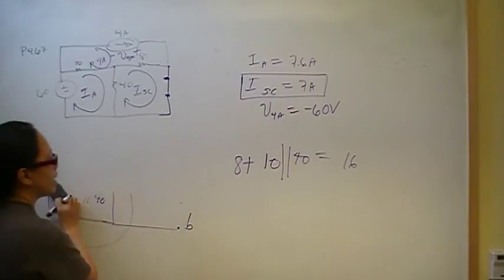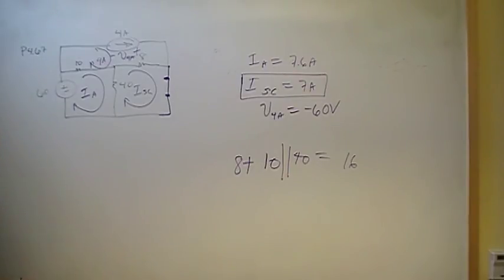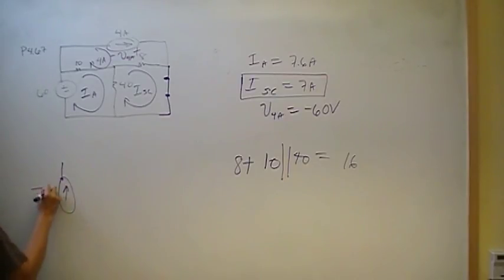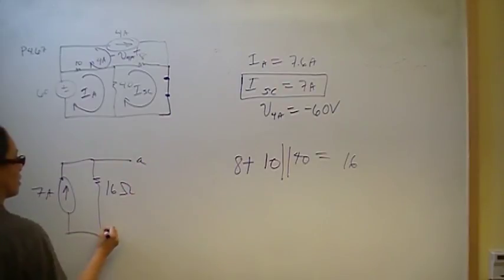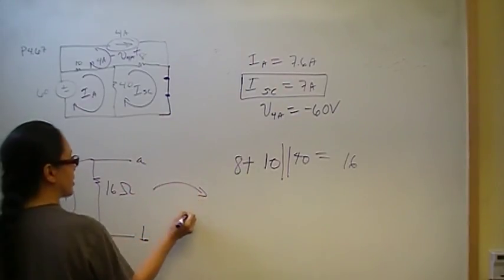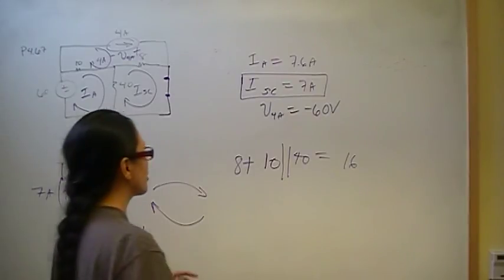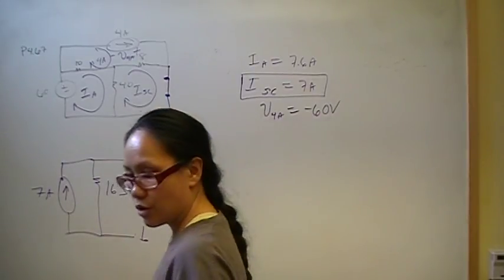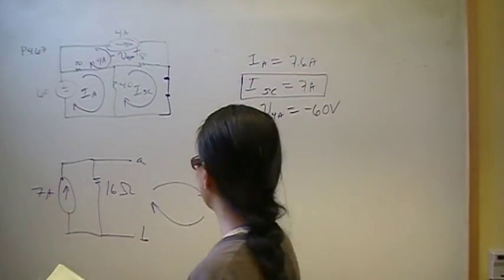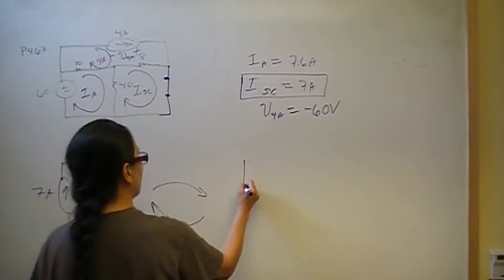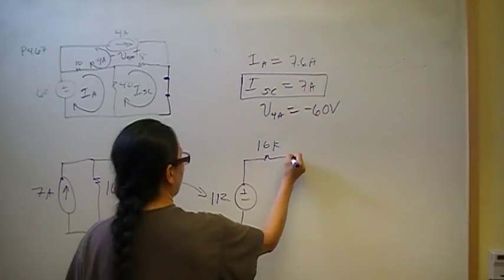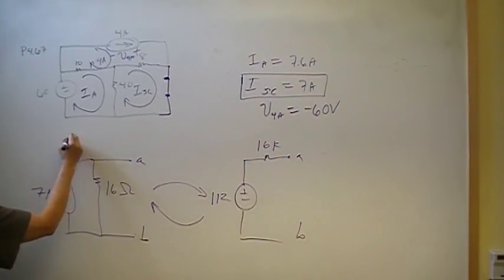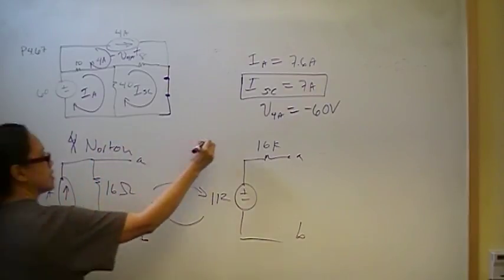Let's draw our Norton Equivalent Circuit: that's a 7-amp current source in parallel with 16 ohms. To emphasize that Norton and Thevenin are just source transformations of each other, performing a source transformation gives the Thevenin Equivalent Circuit: 112 volts in series with 16 ohms. So this is the Norton equivalent and that is the Thevenin equivalent.